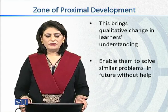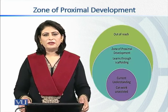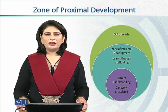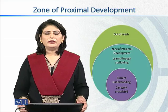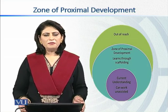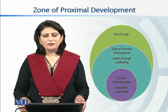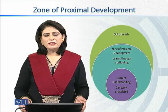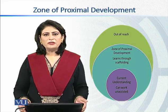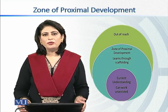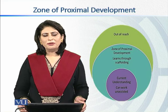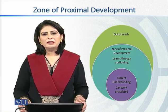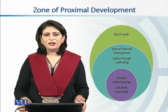The child, for instance, has a grasp over certain structures, and in those areas his or her learning is self-regulated. Then comes another step — the zone of proximal development — and the child is ready to learn new things, but cannot possibly learn them unless there is other-regulation: the guidance that needs to be provided through social interaction to the child.